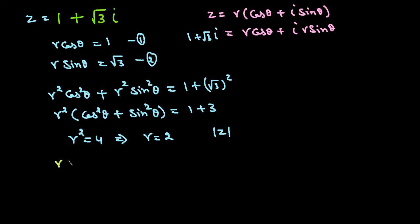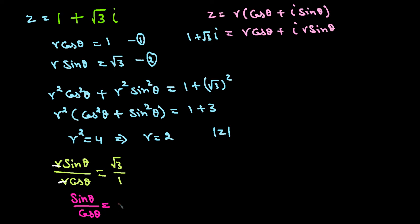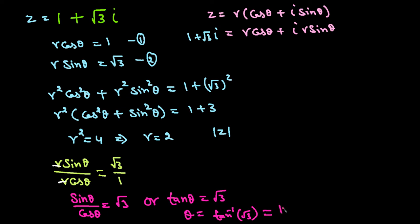Dividing: R sine theta over R cosine theta equals square root of 3 over 1. The R cancels, leaving sine theta over cosine theta equals square root of 3, so tangent theta equals square root of 3. Therefore theta equals tangent inverse of square root of 3, which gives theta equals pi over 3.